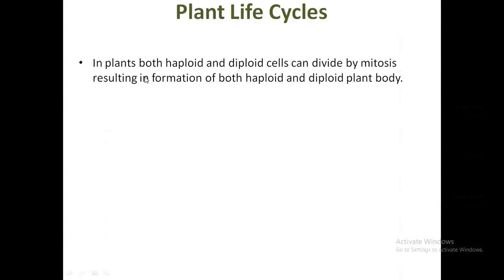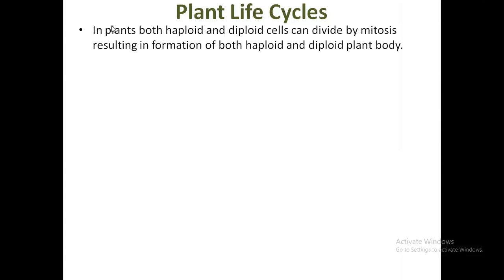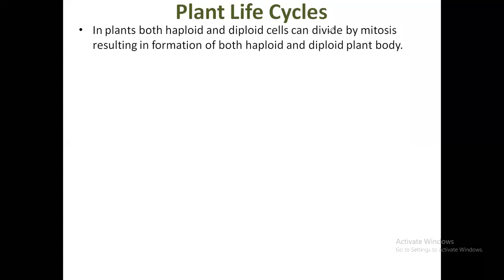The first point is: in plants, both haploid and diploid cells can divide by mitosis, resulting in the formation of both haploid and diploid plant bodies. A unique feature is that in case of plants, a haploid and a diploid plant body can completely develop, because both haploid and diploid plant cells have the capacity to divide by mitosis.